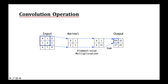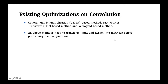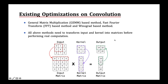There are three main optimizations on convolution, including general matrix multiplication (GEMM), fast Fourier transformation, and the Winograd algorithm. However, all approaches need to transform the input and kernel into matrices before performing real computation. We take the GEMM-based convolution as an illustration example. Each sub-block of input is transformed into a row of the input matrix, and the entire kernel is transformed into a column of the kernel matrix. Then the standard matrix multiplication is performed to generate the output matrix, which is finally transformed into the output.